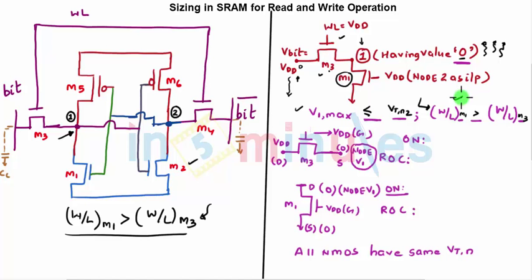So M3 drain is at Vdd, gate is at Vdd, source is node 1 which is currently at zero but due to charge sharing it might slightly increase. Which is source, which is currently at zero but due to charge sharing it might slightly increase, but it's currently at zero.